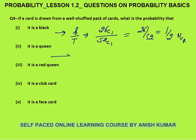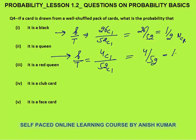Second: the card is a queen. Total cases are 52C1. Favorable cases: there are four queens in a pack — one for spade, one for club, one for diamond, one for heart. So 4C1 favorable cases. Answer is 4 by 52, which equals 1 by 13.